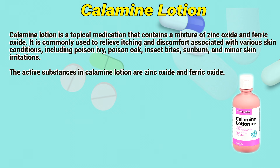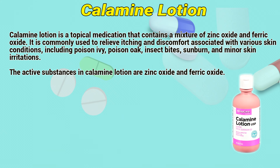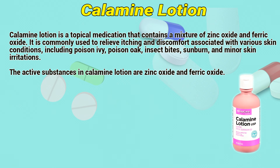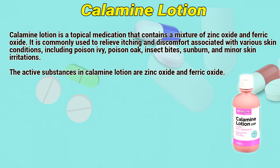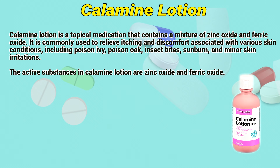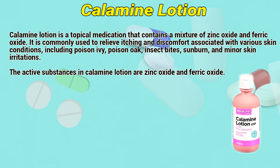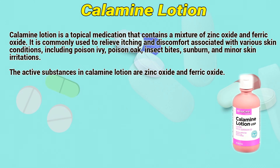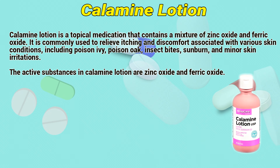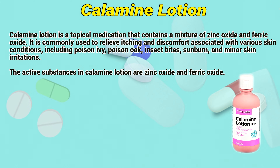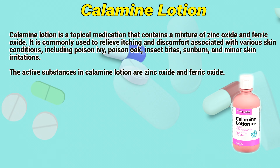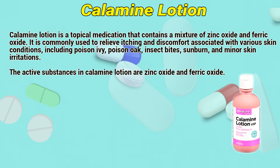Calamine lotion is a topical medication that contains a mixture of zinc oxide and ferric oxide. It is commonly used to relieve itching and discomfort associated with various skin conditions, including poison ivy, poison oak, insect bites, sunburn, and minor skin irritations.